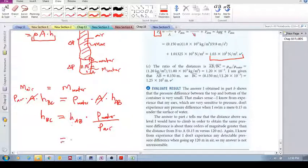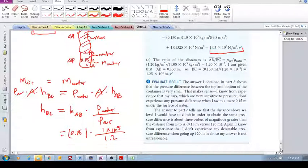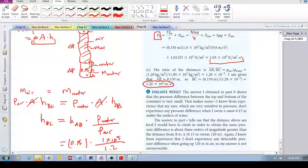So this is equal to 0.15, and the density of water was 1 times 10 to the 5, and density of air was 1.2. So the answer then becomes this, 125 meters, 1.25 times 10 to the 2.